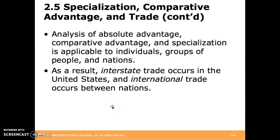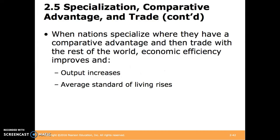For instance, in California, they may have a great climate and location for growing grapes and making wine, whereas in Mississippi, they may be well suited for growing cotton for making clothing. They may both be able to do the other job; however, if each specializes in what they do better, then there'll be more wine made and more cotton grown overall, and they can trade and both gain. When nations specialize where they have a comparative advantage and then trade with the rest of the world, economic efficiency improves, output increases, and the average standard of living rises.